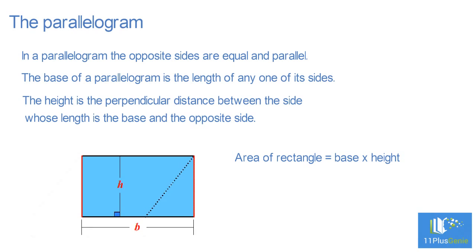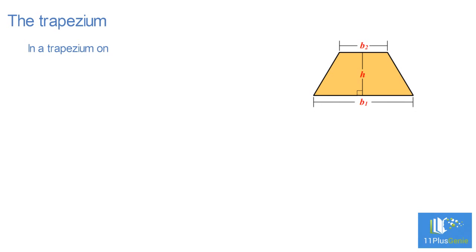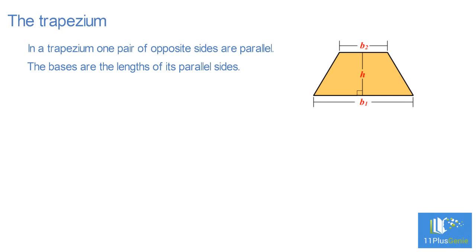The area of the rectangle is base times height. The area A of a parallelogram is the product of the base B and the height H. In formula form: area equals base times height. In symbol form: A equals B times H. In a trapezium, one pair of opposite sides are parallel.